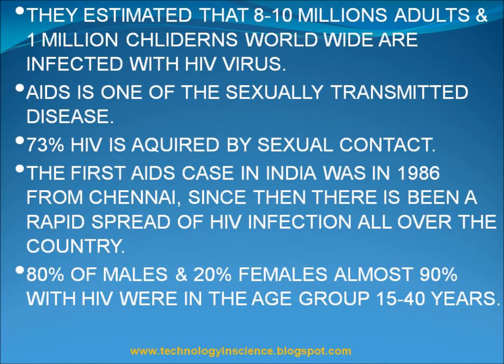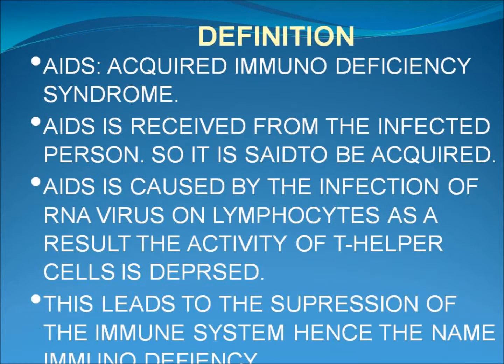The first AIDS case in India was in 1986, and since then there has been a rapid spread of HIV infection all over the country. 80% of males and 20% females — almost 90% of those with HIV — were in the age group of 15 to 40 years. AIDS is received from an infected person, so it is said to be acquired.